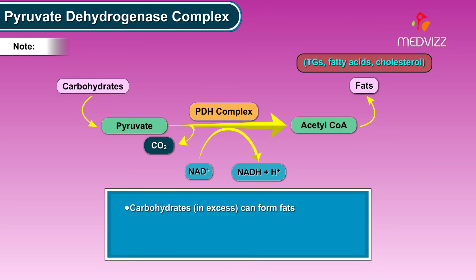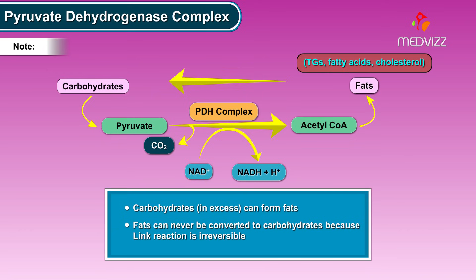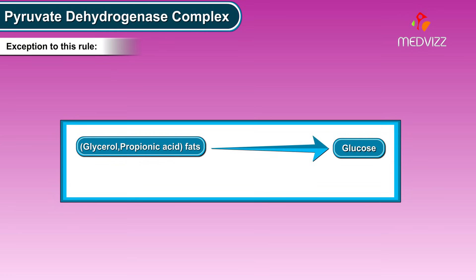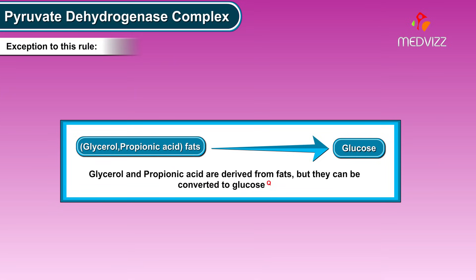Carbohydrates in excess can form fats, but fats can never be converted to carbohydrates because the link reaction is irreversible. An exception to this rule is glycerol and propionic acid, which are derived from fats but can be converted to glucose.